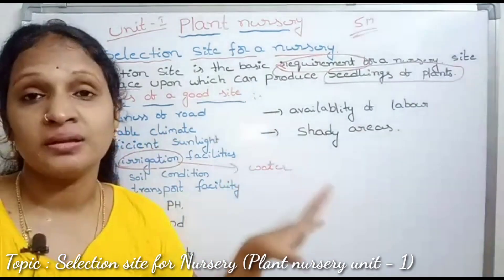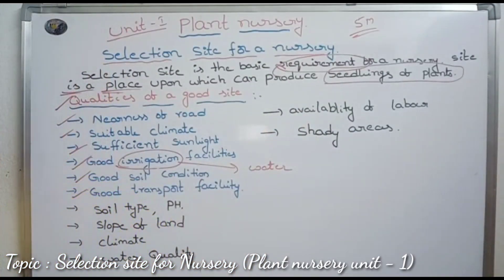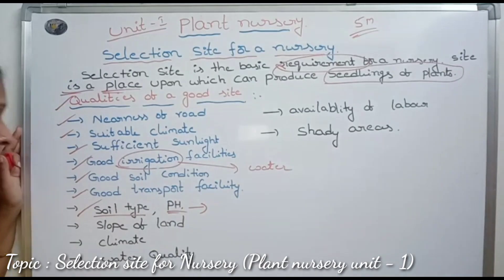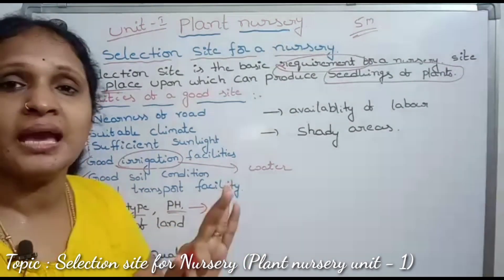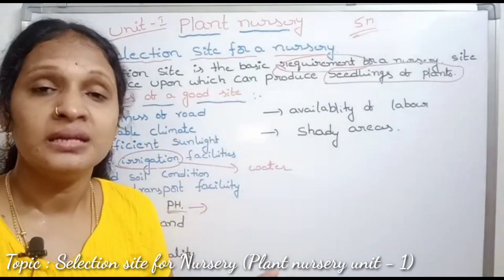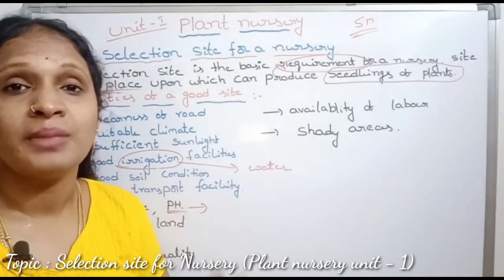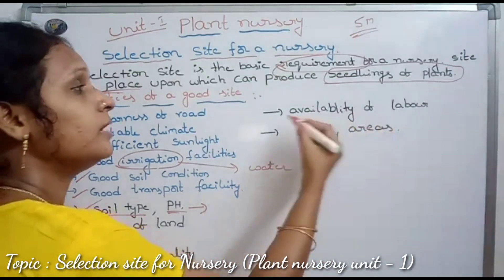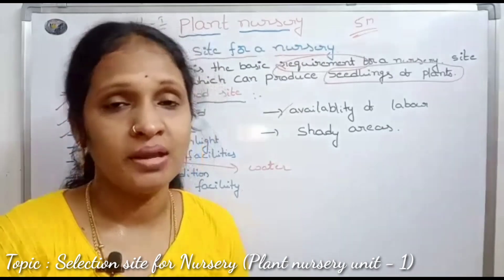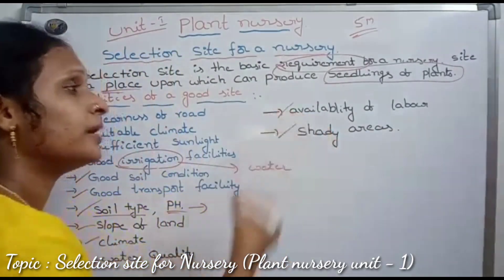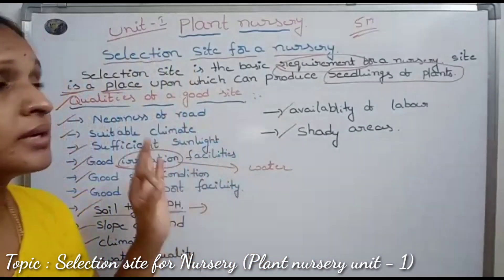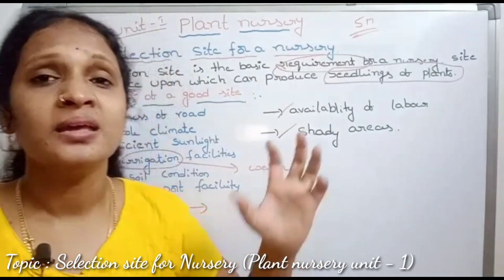This site selection is affected by several factors: soil type and pH, slope of the land, soil type of the plant, climate, water quality, availability of a lab, and shady areas. There should be some sunlight and some shady areas available. These are the site requirements that we have to maintain.